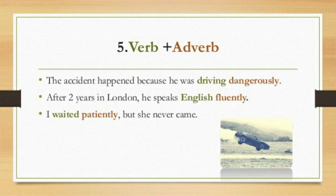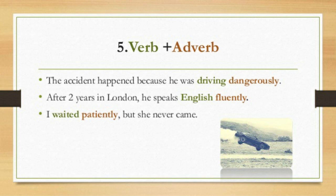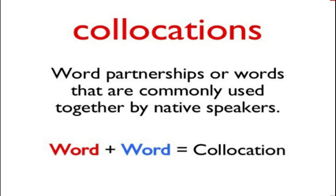The fifth form of collocations are formed with the help of verb plus adverb. Example: 'The accident happened because he was driving dangerously.' — 'driving' is the verb and 'dangerously' is the adverb. Next: 'After two years in London, he speaks English fluently.' And: 'I waited patiently but he never came.' — 'waited' is the verb and 'patiently' is the adverb.